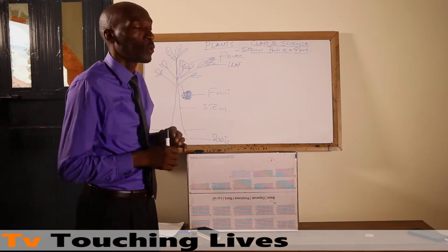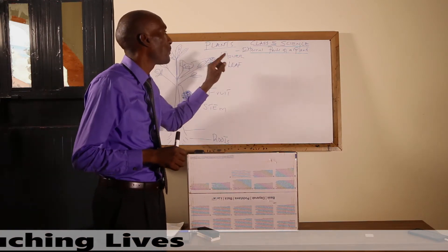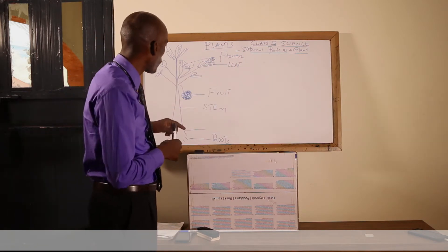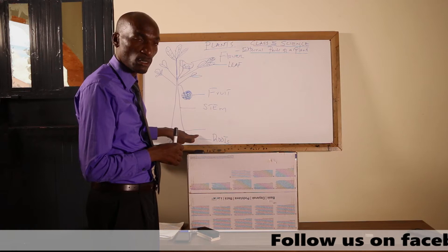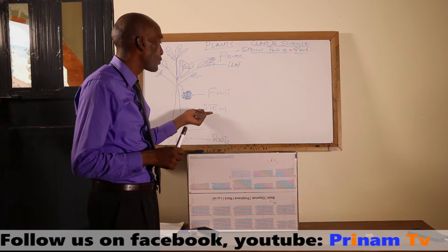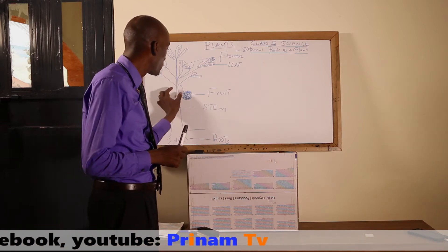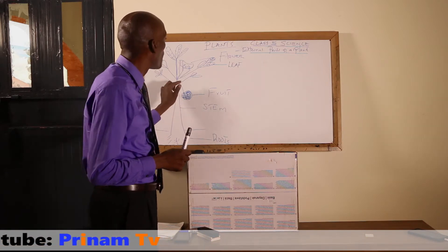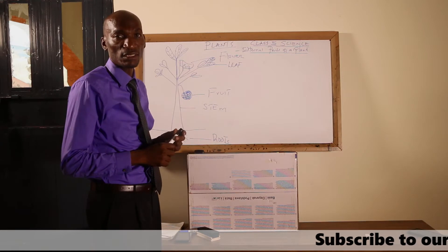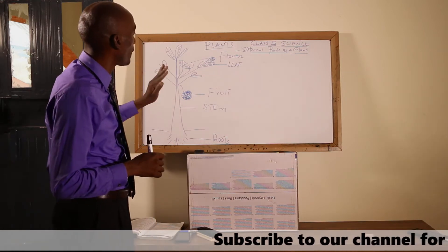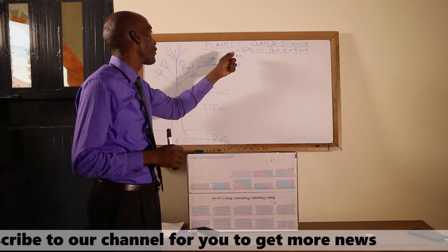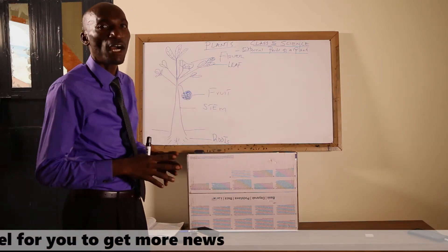For us to learn about plants, we have to know the external parts of a plant. As you can see in my diagram here, we are going to start with the roots. Roots are one of the external parts of the plant. Number two, we have the stem. Number three, we have the leaves, then we have the flowers. So to have a plant, we have the roots, the stem, the leaf, the flower, and the fruits.